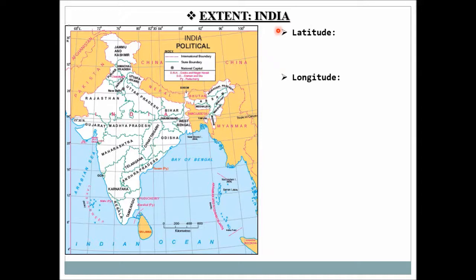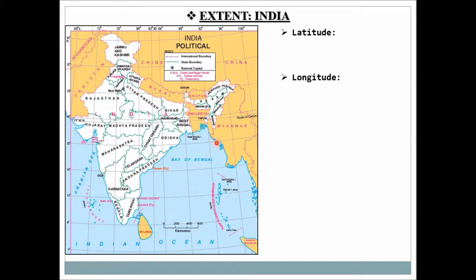Remember: whenever we are finding latitudinal extent, we start from the part nearest to the equator. India is near the equator from its southern part, so we start from the south. For longitude, we start from the part nearest to the prime meridian. India's western part is nearest to the prime meridian, so we start from the western longitude towards the eastern longitude.